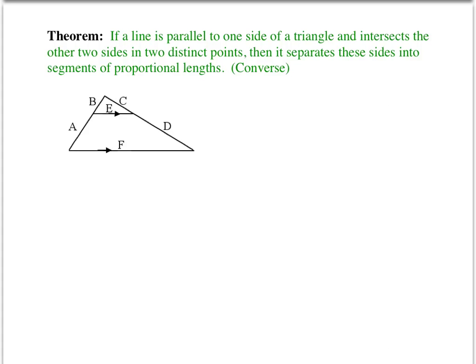The first theorem states if a line is parallel to one side of a triangle and it intersects the other two sides in two distinct points, then that line separates the sides into proportional segments.